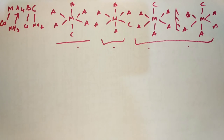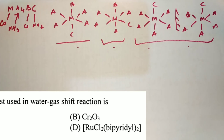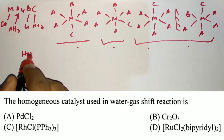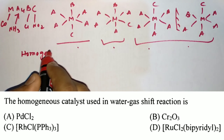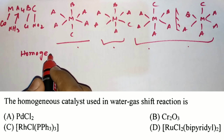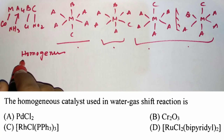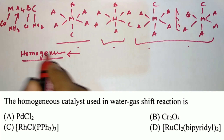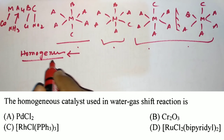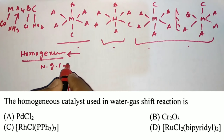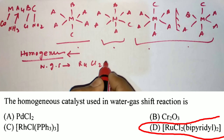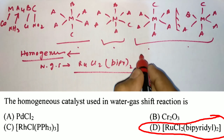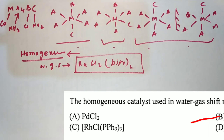Moving to JAM 2017, the first question asks about the homogeneous catalyst used for the water gas shift reaction. You need to know this topic from the Wilkinson-type reference book. The final answer is RuCl2(bipy)2, which is the homogeneous catalyst for the water gas shift reaction.